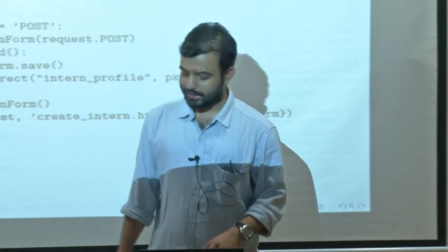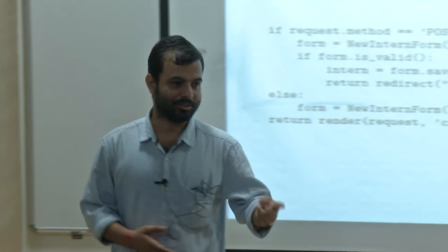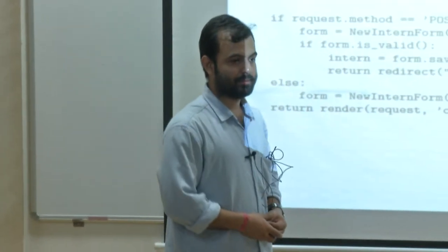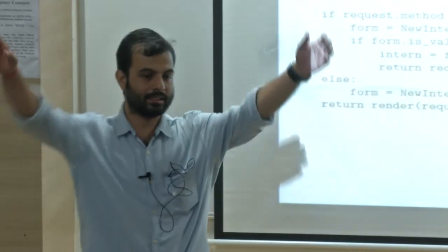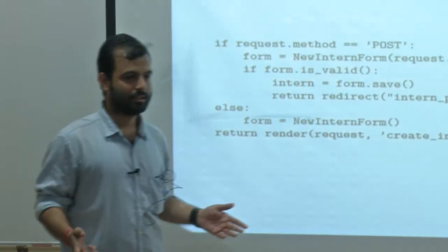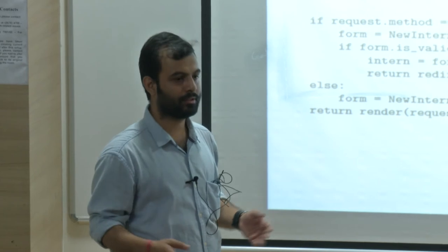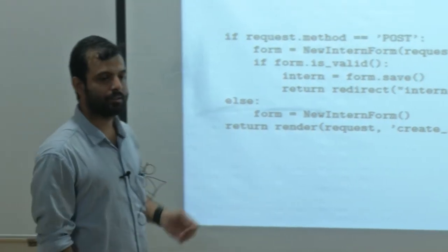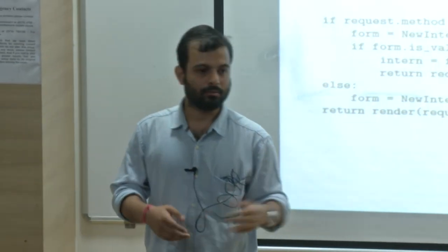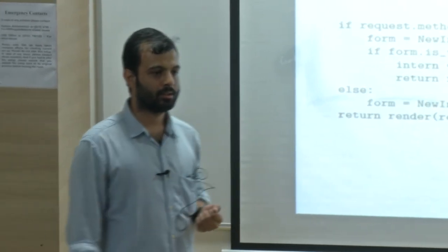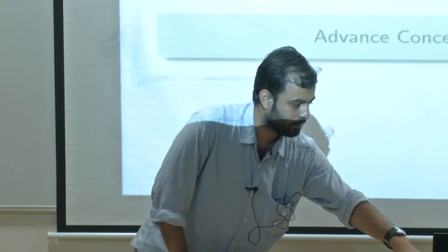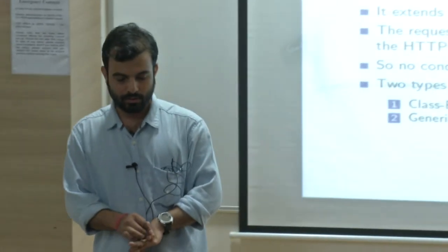If the request is POST, it takes all variables from POST, creates the form, checks if it's valid, saves it, and gives you the created object. If you call redirect, it goes to another function. If the request is not POST, you create an empty form, send it to the create HTML with the form variable. The benefit is obvious — when your team is small, you want less code, so development becomes faster. The form API also provides built-in validations, checking for SQL injection and other attack types. If the form is valid, only then it saves.